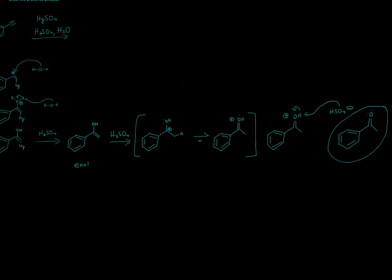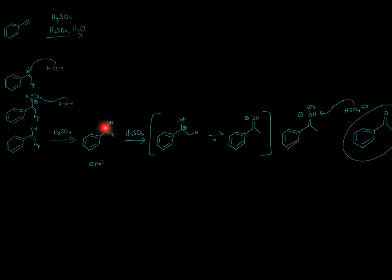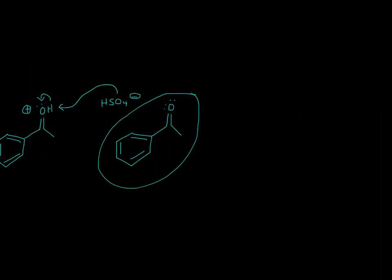Technically, you can memorize that whenever you have an enol, which is a double bond next to an alcohol, you can kind of just push the double bond right here, get rid of the hydrogen, and then you'll end up with this product. But if you understand the mechanism, then you don't have to worry about forgetting how to do this. So I hope that helped, and thanks for watching.